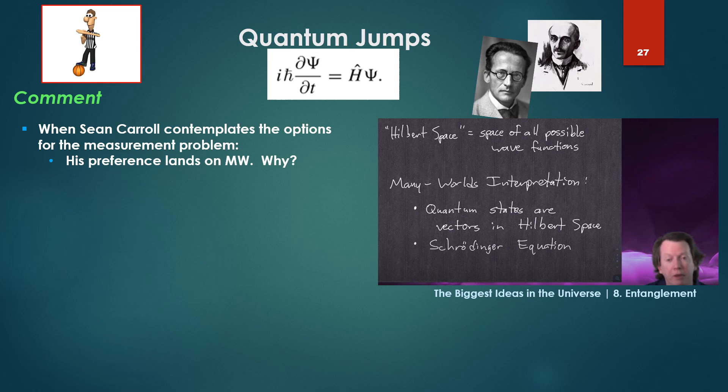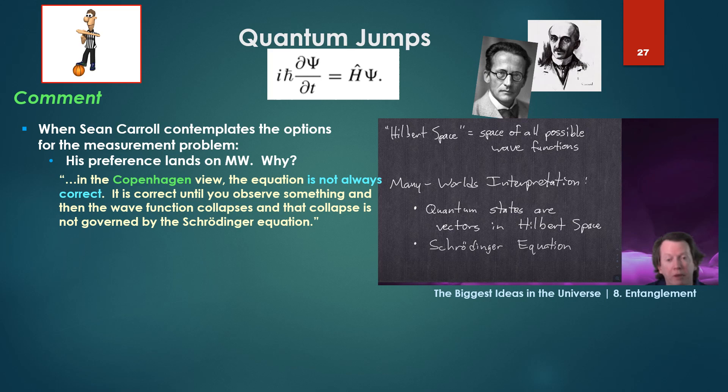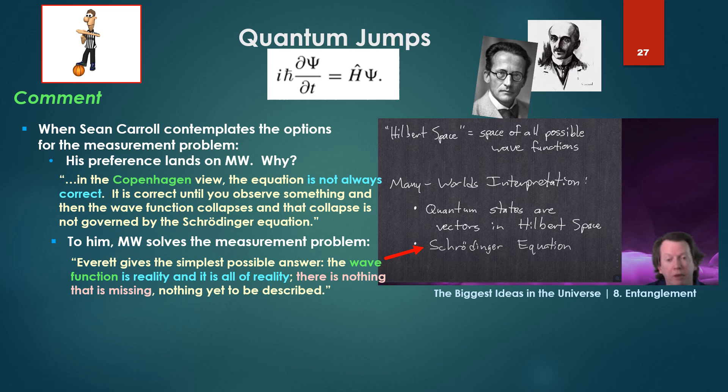When Sean Carroll contemplates the options for the measurement problem for solving it, his preference lands on the many worlds, as opposed to Bohm or Copenhagen or the GRW, etc. Why is that? He says, well, in the Copenhagen view, the equation is not always correct. It is correct until you observe something, then the wave function collapses, and that collapse is not governed by the Schrödinger equation. True. To him, many worlds solves the measurement problem. Why? Because Everett, author of many worlds, gives the simplest possible answer. The wave equation, that's why he's got the Schrödinger equation there, central, is the wave function is reality, and it is reality, and it is all of reality. There is nothing that is missing, nothing yet to be described.